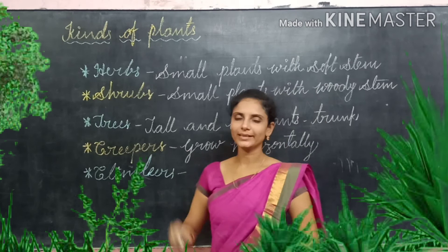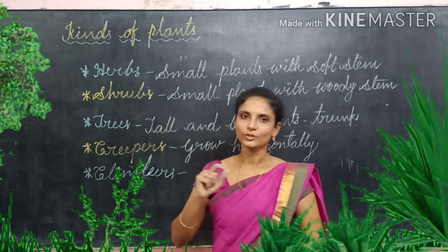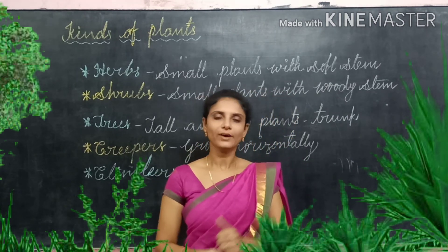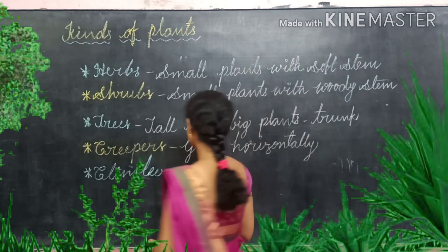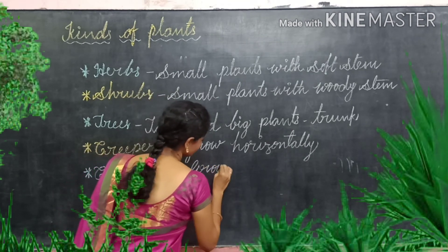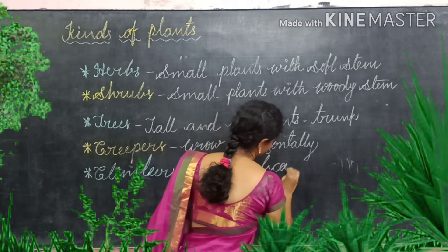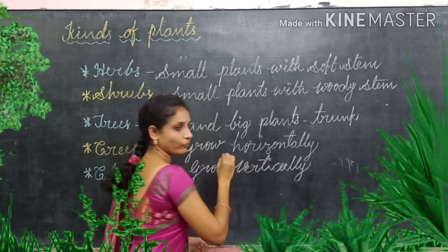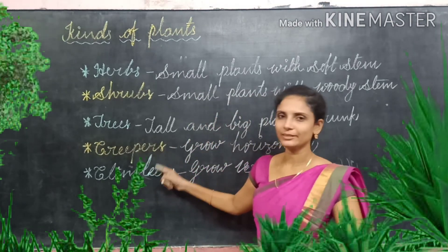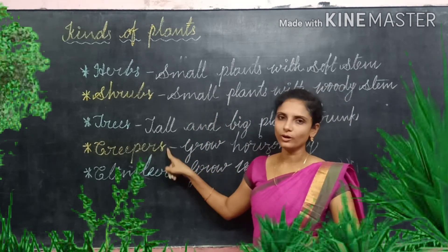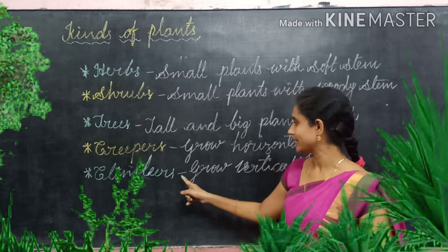The fifth type is climbers. Climbers also have a very weak stem, but these plants grow vertically by taking the support of other plants, a wall, or a stick. The difference between creepers and climbers is that creepers grow horizontally on the ground, while climbers grow upward by taking support.